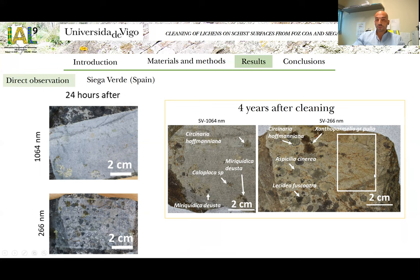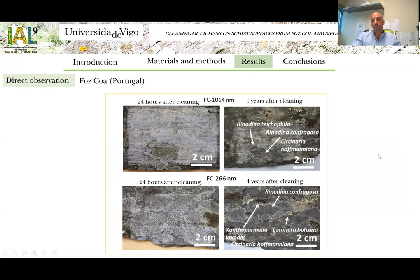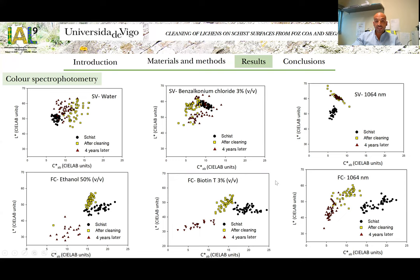For the sample cleaned with 266 nanometers, the lichens which remained on the surface after the laser application were clearly recovered after four years. And as we can observe here with this rectangle, after the 24 hours after cleaning, it was possible to observe some lichen remains, but four years later these remains disappeared. For the samples from Foscoa, the recolonization was more intense than that detected in the Ciegaverde samples. It is possible to observe a clearly recovered lichen on the surface after four years, in the case of the surfaces cleaned with 266 nanometers.